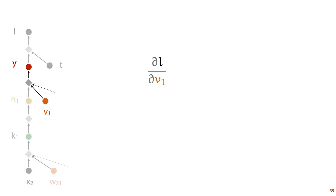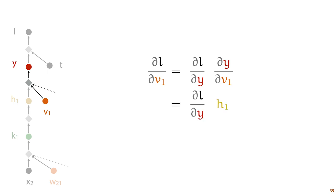With this notion in hand, we can go back to our computation graph and work our way down. For every input of every computation, we can work out the derivative in terms of the derivative of the output of the current computation. We never need to worry about what happens after the output because the derivative of the loss with respect to the output has already been computed. For instance, if we want to work out the derivative of the loss with respect to parameter v1, we can apply the chain rule to this computation, which tells us that the derivative of the loss with respect to v1 is equal to the derivative of the loss with respect to y times the derivative of y with respect to v1. The factor on the left we don't need to work out because we've already computed it. Once we have the local derivative worked out, we simply fill in the value h1 from the forward pass and multiply it by this global derivative that we worked out in the previous step.